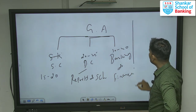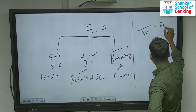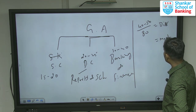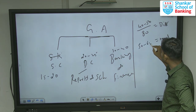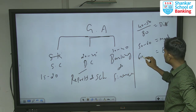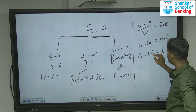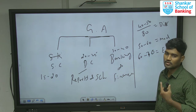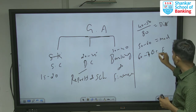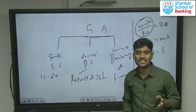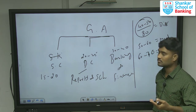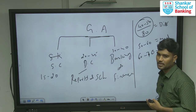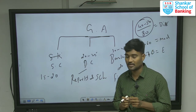In GK, if the paper is very difficult, you have to secure a minimum of 40 to 50 marks. If moderate, secure 50 to 60. If very easy, secure 60 to 70 questions. In 2021, out of 200, the cutoff was around 66 marks. So securing 40 to 50 in GK when the paper is difficult, 50 to 60 for moderate, and 60 to 70 for easy — these are the strategy targets in terms of number of questions attempted.